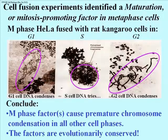We can conclude that a factor in metaphase cells can induce the onset of mitotic events in non-mitotic cells. Not only that, the factor is conserved — in this example, between rat and human cells.